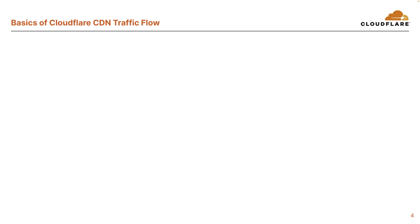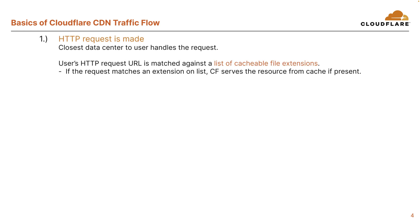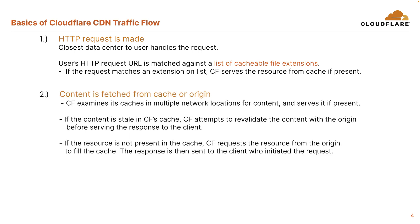So if we look at the very basics of the traffic flow now. First, an HTTP request is made and the closest data center to the user handles the request. The user's HTTP request URL is matched against a list of cacheable file extensions. If the request matches an extension on the list, Cloudflare serves the resource from cache if present. Second, content is fetched from cache or origin. Cloudflare examines its caches in multiple network locations for content and serves it if present. If the content is still in Cloudflare's cache, Cloudflare attempts to revalidate the content with the origin before serving the response to the client. If the resource is not present in the cache, Cloudflare requests the resource from the origin to fill the cache and the response is then sent to the client who initiated the request.